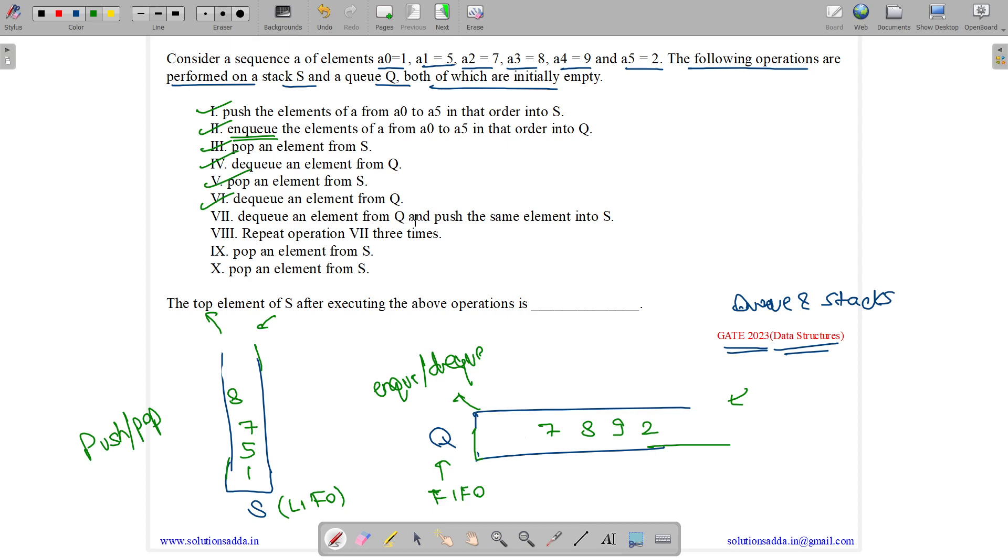Dequeue an element from Q and push the same element into S. So dequeue will be 7 and 7 will be pushed over here.